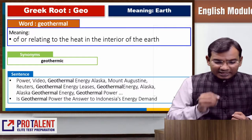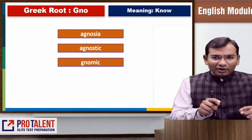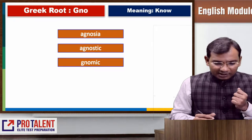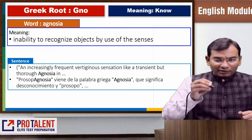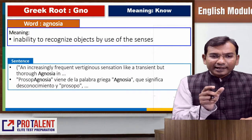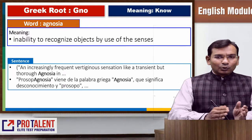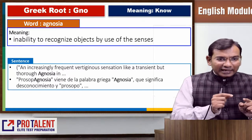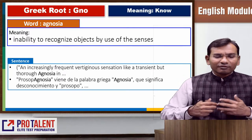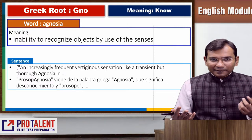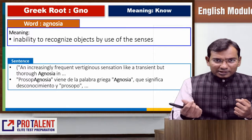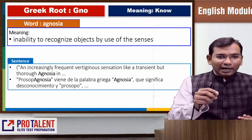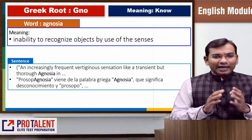The next root is GNO, which refers to knowledge. Words derived from it include agnosia, agnostic, and gnostic. Agnosia is an inability to recognize objects by use of the senses — eyes, tongue, skin, ears, smell — the inability to recognize any object through those senses is called agnosia.